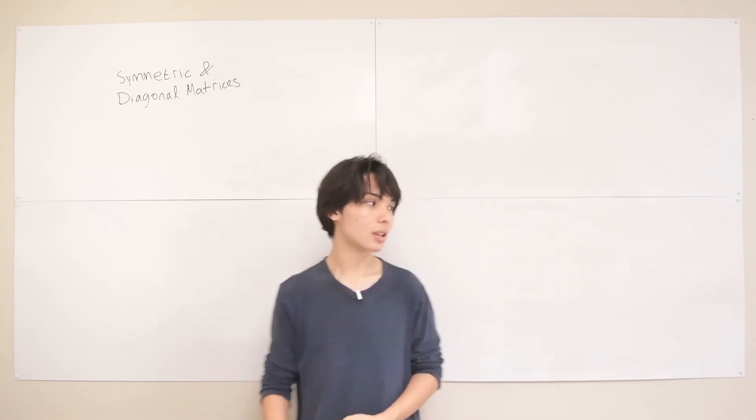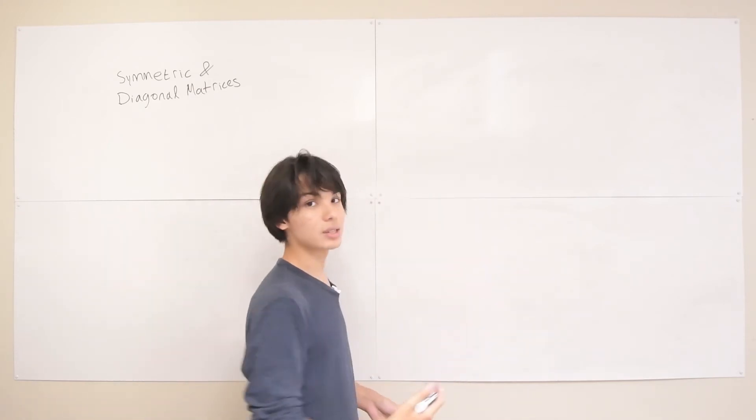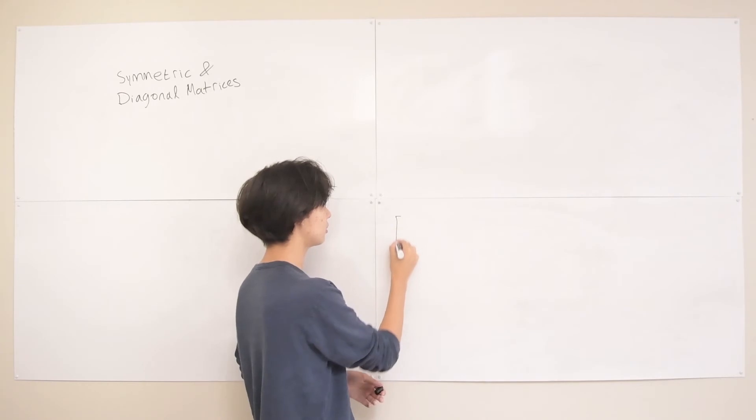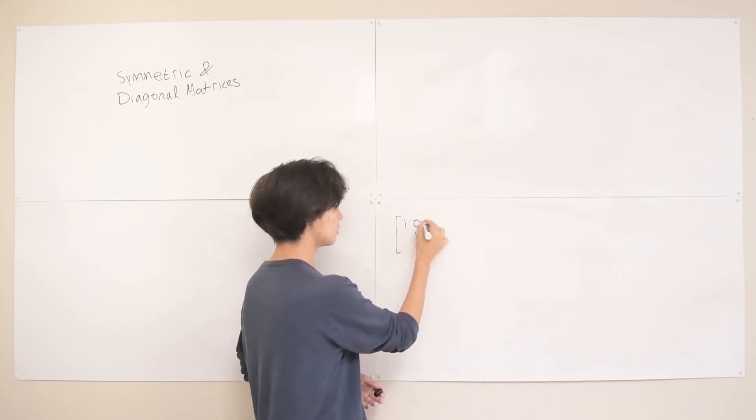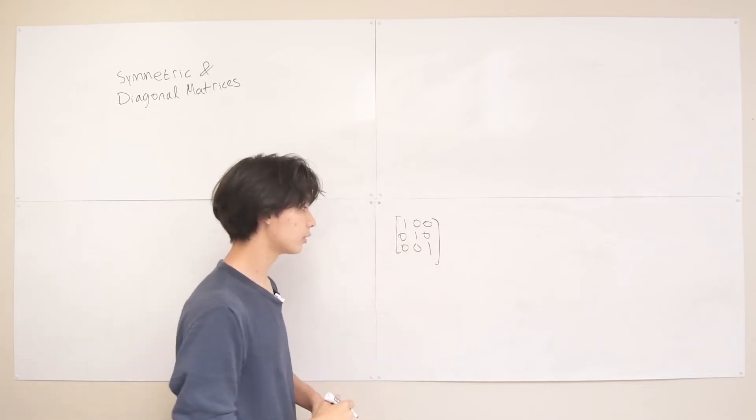Okay, so diagonal matrices is the second thing to talk about. So we've already seen one diagonal matrix, and that's the identity matrix. All right, so the identity matrix is 1s across the diagonal, 0s everywhere else.